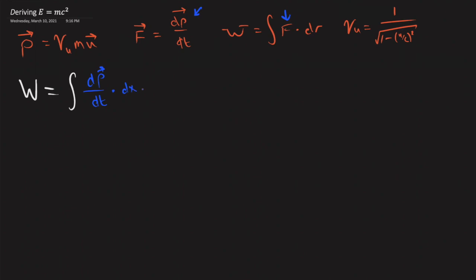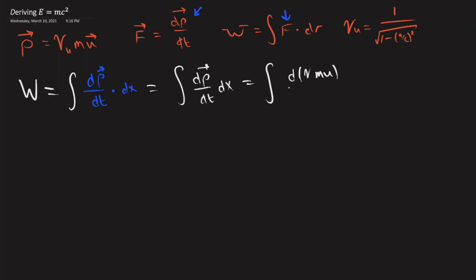Because this is in the same direction, we're going to assume that momentum is only along the dx direction, so the dot product is just one. We can just multiply them by each other. So we get dp/dt dx, and now we're going to replace dp with the relativistic momentum expression. We also get dx/dt, which is u_x. Here we need to use the product rule, and dx divided by dt is u_x.